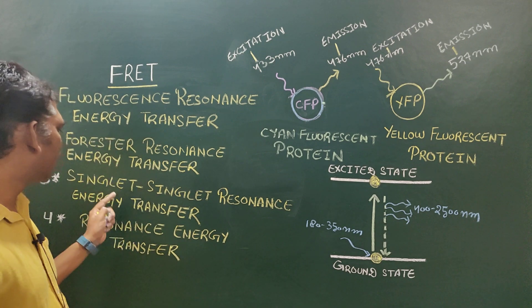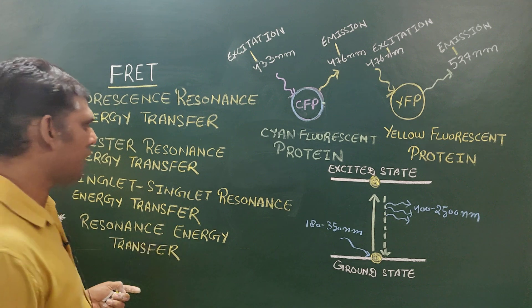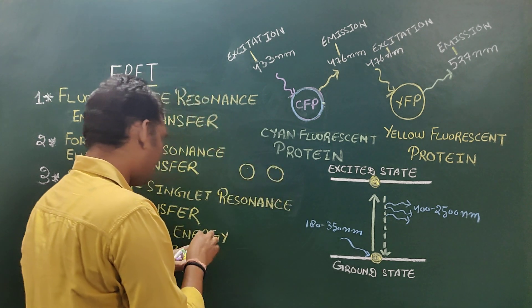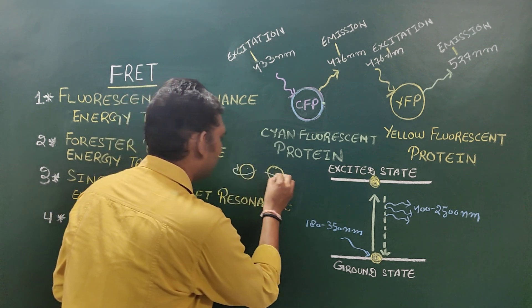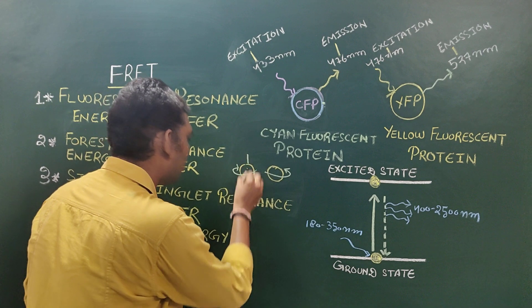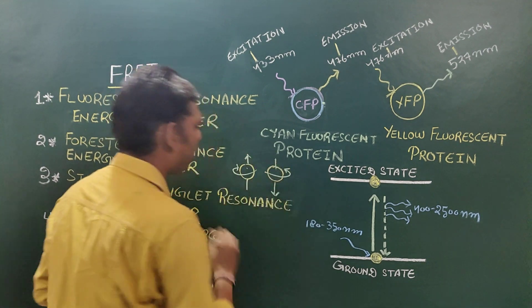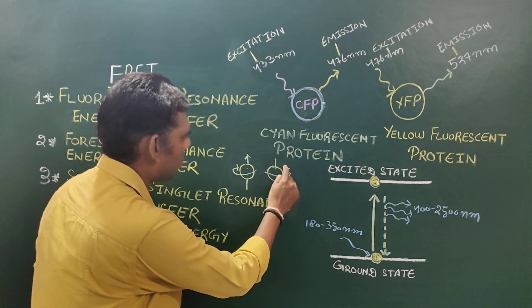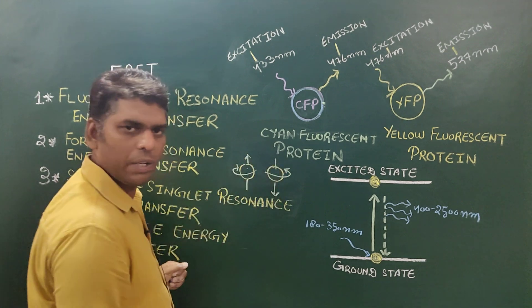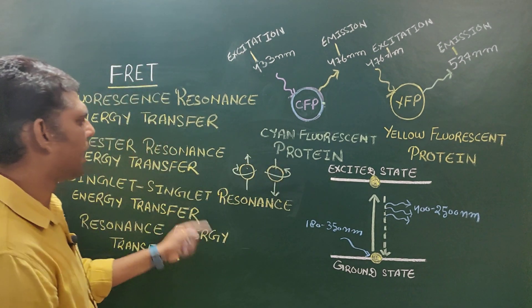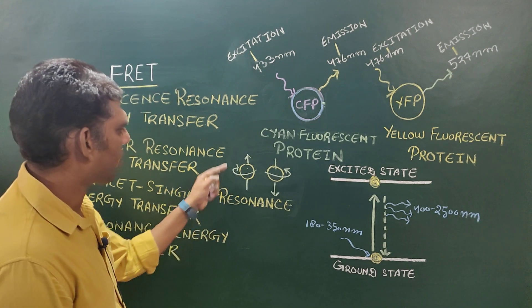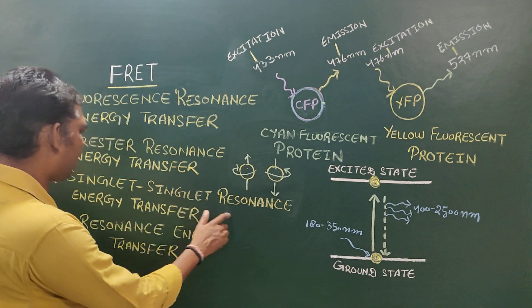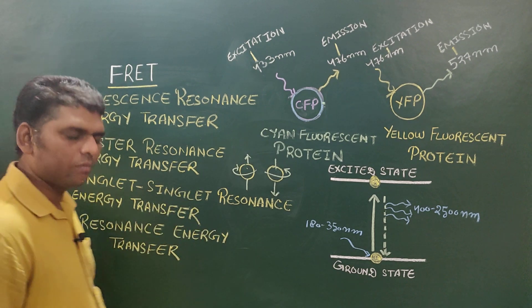Fluorescence takes place in those molecules in which electrons are present in the singlet state. The singlet state is when a molecule contains paired electrons, and both of those paired electrons have opposite spin — one rotating clockwise and the other anti-clockwise. That condition of the electron is known as the singlet state, and molecules with electrons in the singlet state are involved in the process of fluorescence. So FRET is also known as Singlet-Singlet Resonance Energy Transfer.